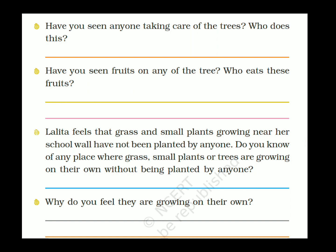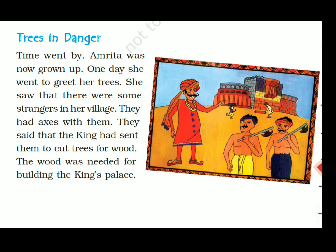Our trees are in danger. Time went by and Amrita grew up. One day she went to greet her trees and saw strangers in her village. They had axes with them and said that the king had sent them to cut trees for wood, which was needed for building the king's palace.